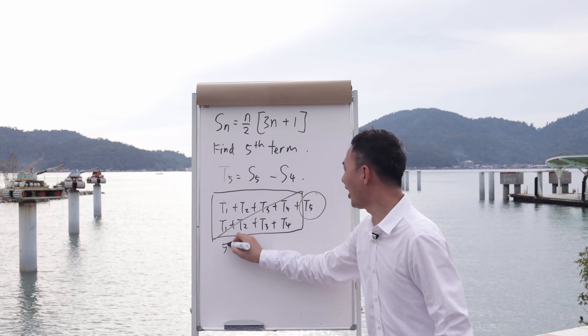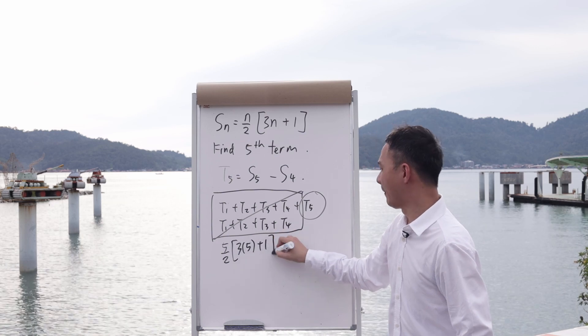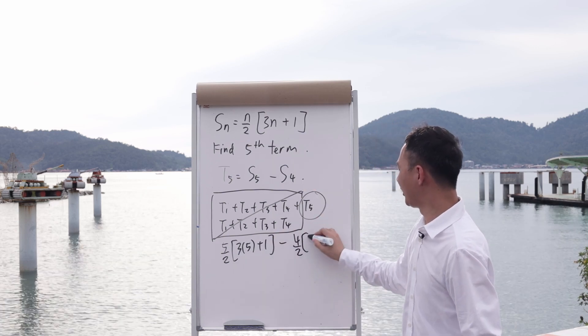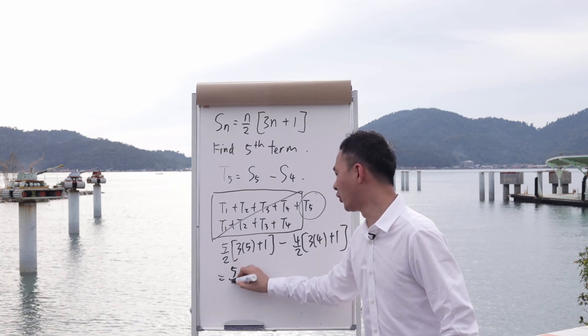So I substitute 5: 5 over 2 times (3 times 5 plus 1), minus 4 over 2 times (3 times 4 plus 1). This equals 5 over 2 times 16 minus 2 times 13.